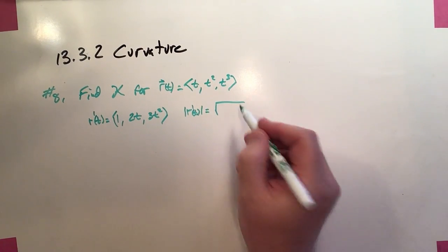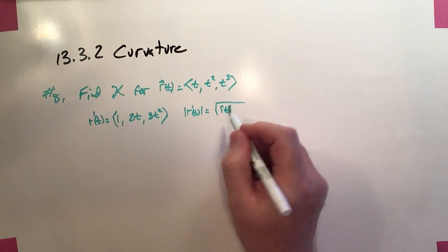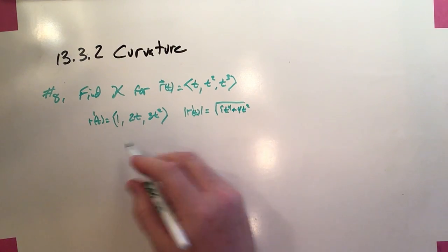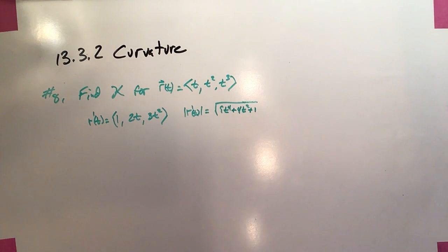This is going to be the square root of 9t to the fourth plus 4t squared plus 1. Again, no common factors. This itself does not factor.